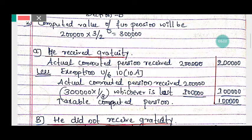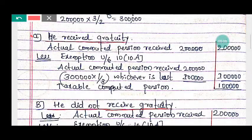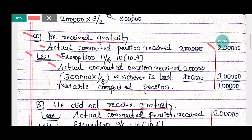Now, Case A — if he received gratuity. The actual computed pension received by Mr. Rahul is rupees two lakh. Under Section 10, sub-section 10A, the exemption allowable is one-third of the computed full value of pension. One-third of three lakh equals rupees one lakh.